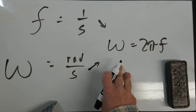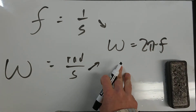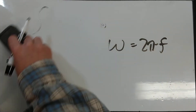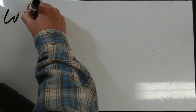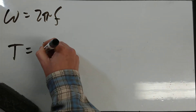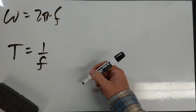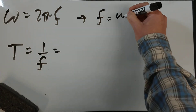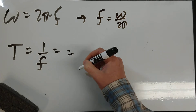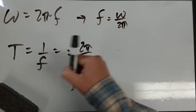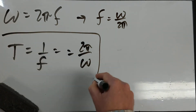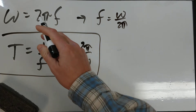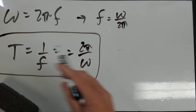So how does this relate to period? If omega equals 2 pi f, and period equals 1 over frequency, then solving for frequency gives f equals omega over 2 pi, and plugging in gives period equals 2 pi over omega. That's important and that formula is on the AP Physics C reference sheet.